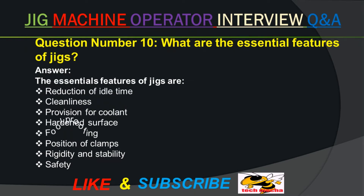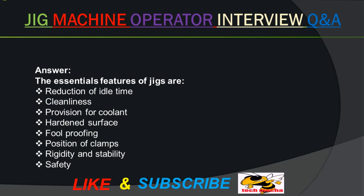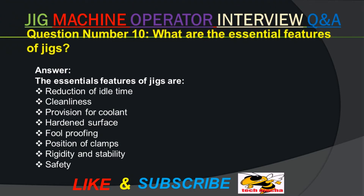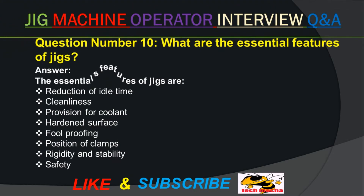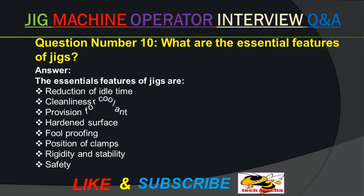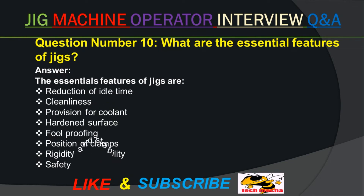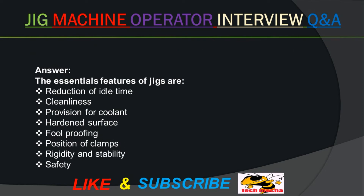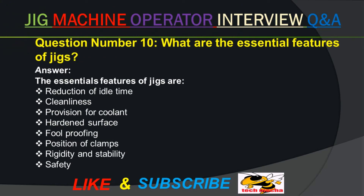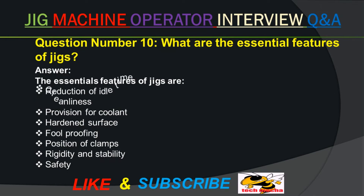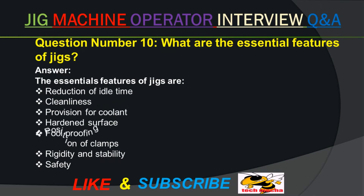Question number ten. What are the essential features of jigs? Answer. The essential features of jigs are: reduction of idle time, cleanliness, provision for air coolant, hardened surface, fool proofing, position of clamps, rigidity and stability, and safety.